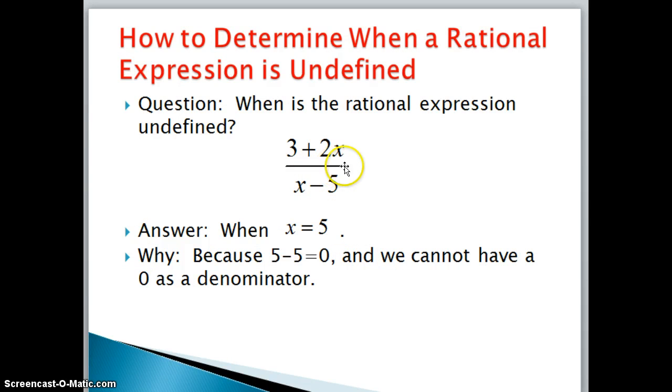Alright, so here we have a rational expression, 3 + 2x over x - 5. And the question that we want to answer is, when is this rational expression undefined? And the answer to that question would be, when x equals 5.